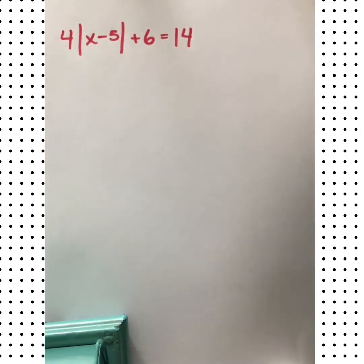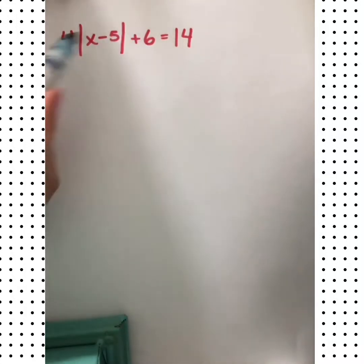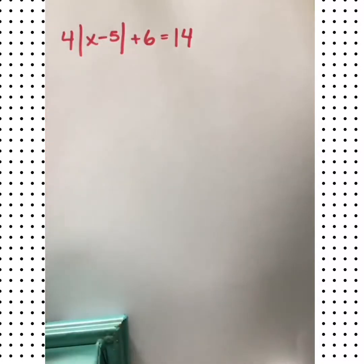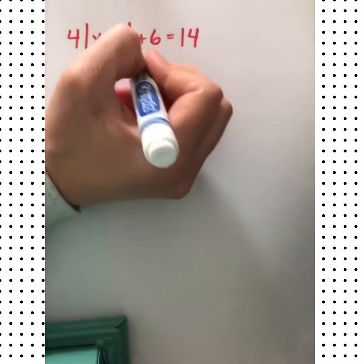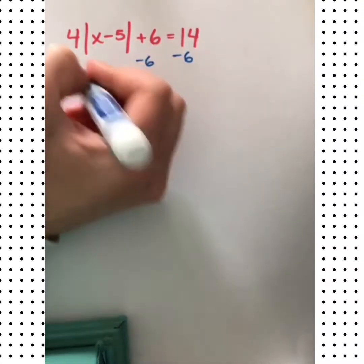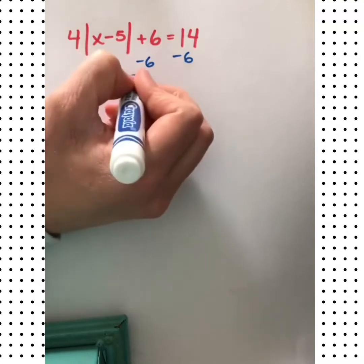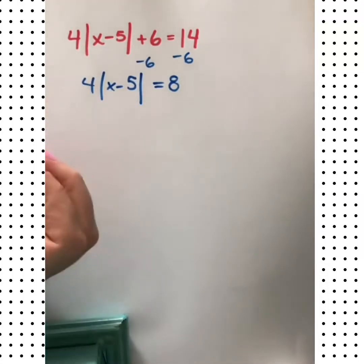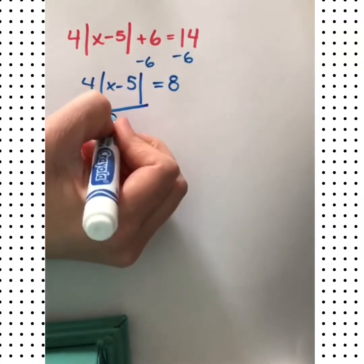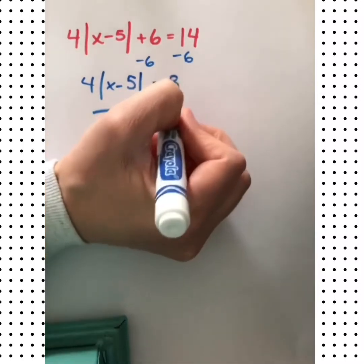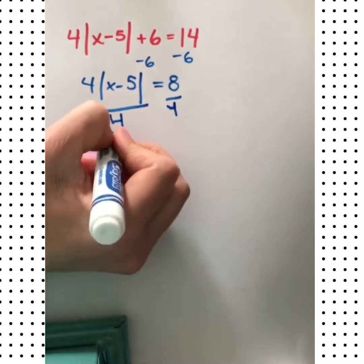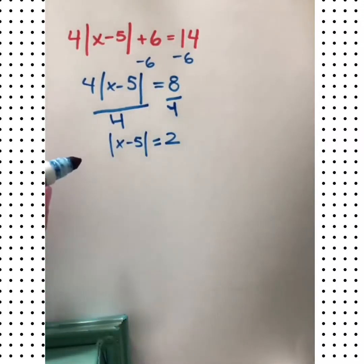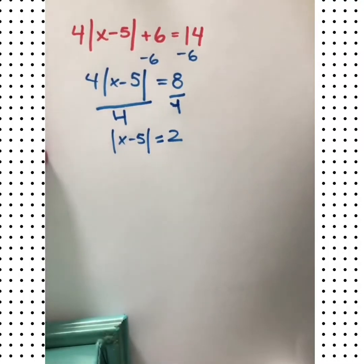Let's try this one. We don't want to make our two cases yet because we have things going on outside of the absolute value. First, we want to get rid of all these extra operations and then we can set up the two cases. So let's solve this by subtracting 6 from both sides. Now we can get rid of this 4 by using the inverse and dividing. Now we have the absolute value isolated and now we can make the two separate cases.